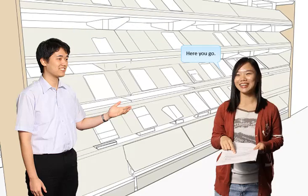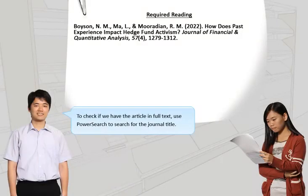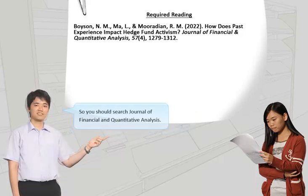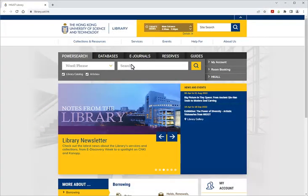Here you go. To check if we have the article in full text, use PowerSearch to search for the journal title. So you should search Journal of Financial and Quantitative Analysis. Go to the library's home page and choose PowerSearch.